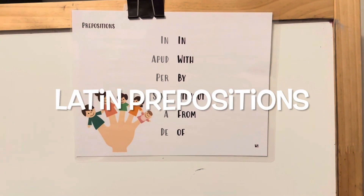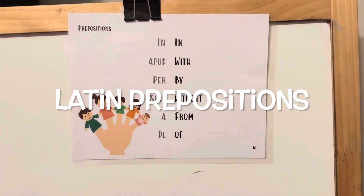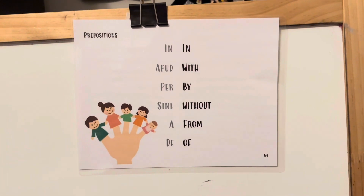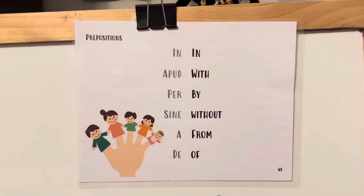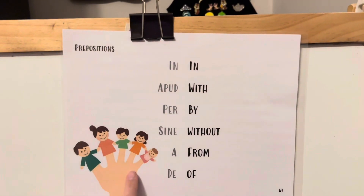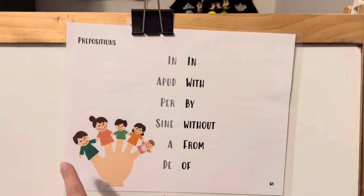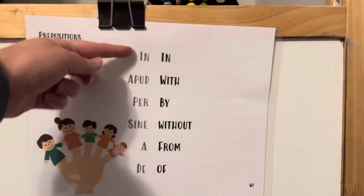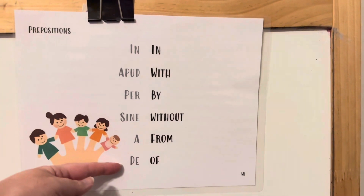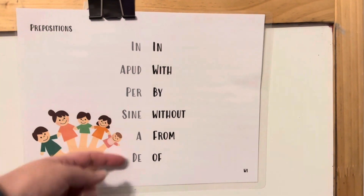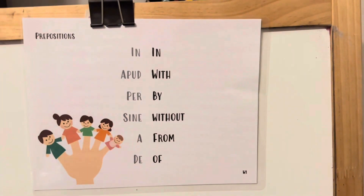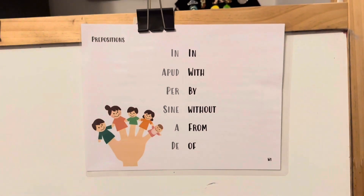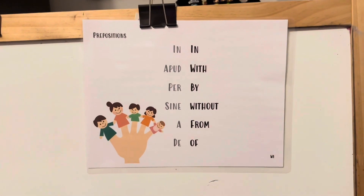Cycle three, week one Latin. These are the Latin prepositions we're going to be singing to the song 'Where Is Thumpkin.' On this side is going to be the Latin preposition, and on this side it's going to be the English preposition.